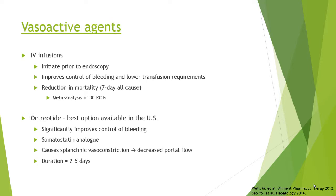Vasoactive agents should be started prior to endoscopy. Octreotide has been shown to improve control of bleeding, lower transfusion requirements, and in a meta-analysis of 30 randomized controlled trials showed a reduction in all-cause mortality at seven days. Terlipressin and somatostatin are also used, though not in the United States. Octreotide works as a somatostatin analog causing splanchnic vasoconstriction, decreasing portal inflow and reducing portal pressure. Duration of octreotide infusion is two to five days depending on when hemostasis is achieved.